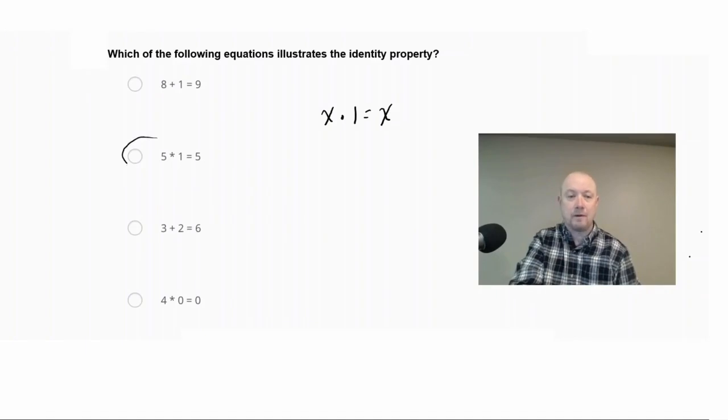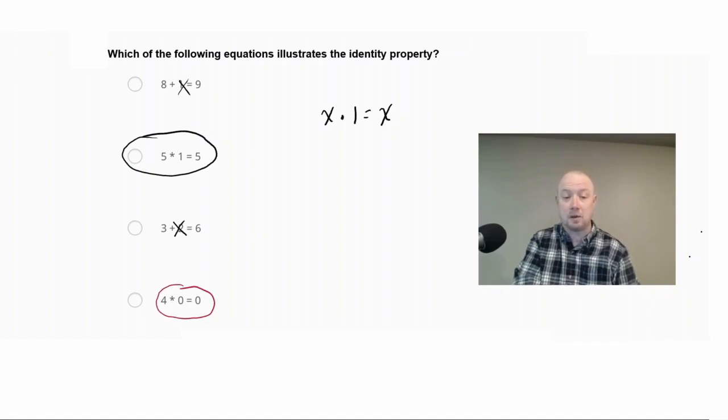So if we look at our choices on here, we can see five times one equals five. And in the rest of these answer choices, we're changing. So in other words, we went eight and we added one to it and we got a new value, nine. So that is not the identity property. Same thing with the other two choices. So three plus two equals six. Well, that is just that operation added to the three. Now, sometimes students would confuse this with the identity property. Four times zero equals zero. Well, you have to talk to students about how this changed the value. So the four didn't remain the same as the answer we got when we multiplied by zero. We got zero as our answer. So this is actually a different property here. So the answer is five times one equals five.